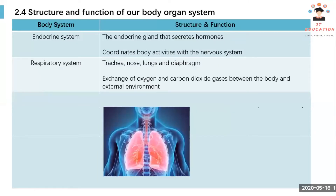The respiratory system — in Chinese we call it hu-xi-xi-tong, and in Bahasa Malaysia we call it sistem pernafasan. This system enables us to breathe, having organs like the trachea, nose, lung, and diaphragm. It is mainly responsible for the exchange of oxygen and carbon dioxide gas between the body and the external environment.